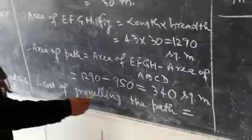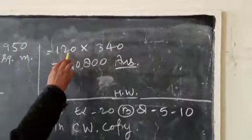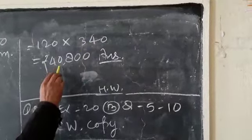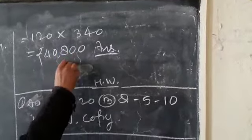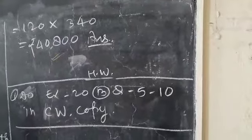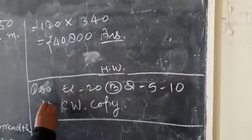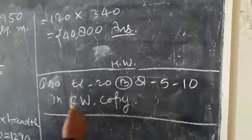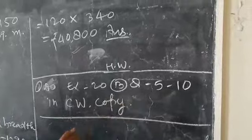Therefore, cost of graveling the path is equal to 120 into 340, that is rupees 40,800, which is the required answer. Therefore, homework: do exercise 20B question number 5 to 10 in classwork copy. Thank you very much.